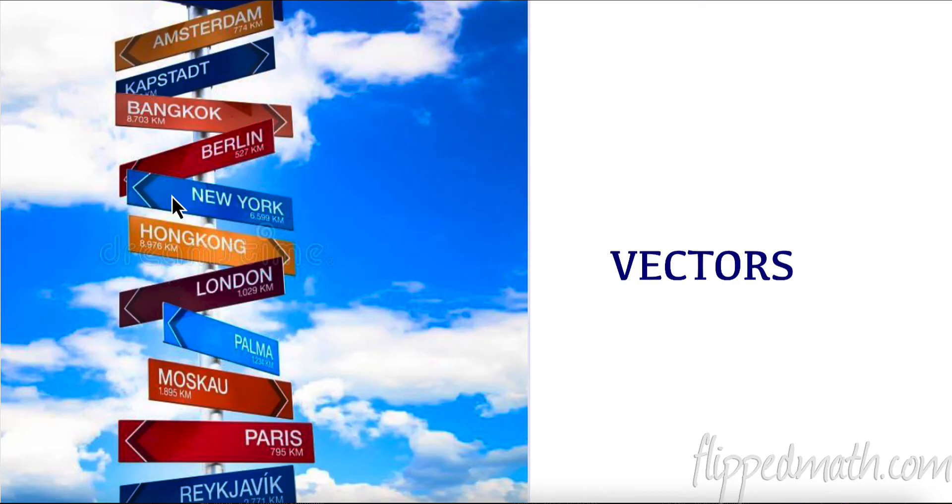So it says here New York is this way and it's 6,599 kilometers away. That would give a direction and a magnitude or how far away something is. So that is a kind of an example of a vector. We're going to talk more about these right now.